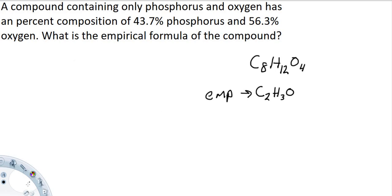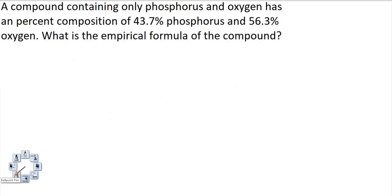So let's give this problem a read. A compound containing only phosphorus and oxygen has a percent composition of 43.7% phosphorus and 56.3% oxygen. What is the empirical formula of this compound?